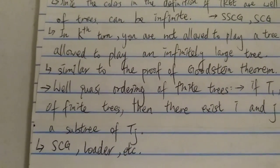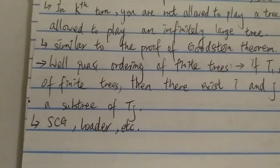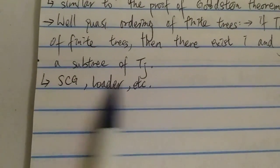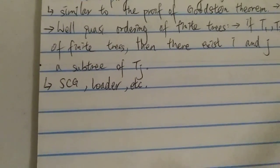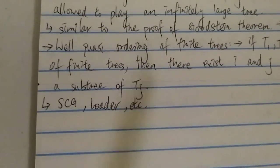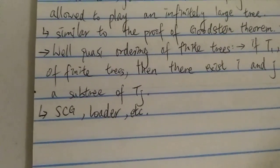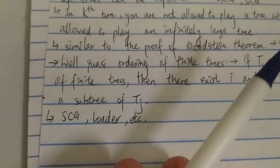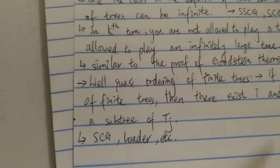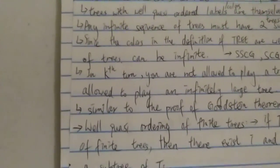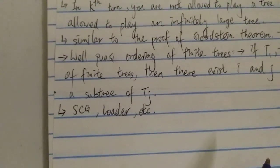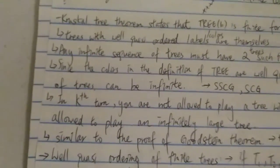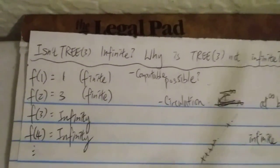If you still don't quite understand, that's okay — the Kruskal tree theorem is pretty difficult to understand and hard to explain in layman's terms. But consider this: SCG and Loader's function are both said to be computable, and even those two functions, which grow much much faster than TREE, are still finite for any finite input k. Using that information, you might be able to see why TREE(k) is also finite — because if it's not, how could these faster-growing functions have finite outputs too?